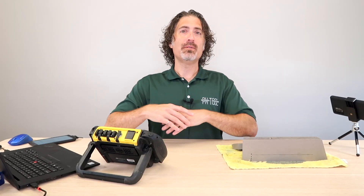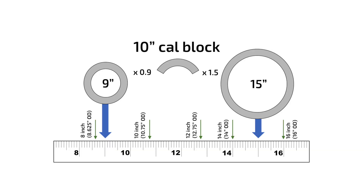For curvature, here's a really simple example: if you have a cal block that is 10 inches in diameter, that block is good for pipe that has an actual OD of 9 inches to 15 inches.